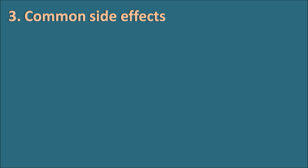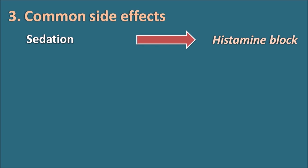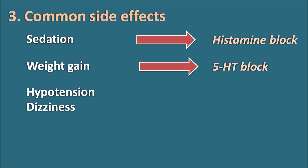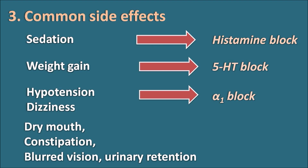The third category is common side effects produced by phenothiazines due to their action on different types of receptors. The first is sedation — phenothiazines are called major tranquilizers because they produce sedation and calmness, mainly attributed to blockade of H1 histamine receptors. They also produce weight gain, mainly because of 5-HT blockade. Phenothiazines also cause hypotension and dizziness, attributed to alpha-receptor blockade. Finally, symptoms like dry mouth, constipation, blurred vision, and urinary retention are observed because of action on cholinergic receptors.